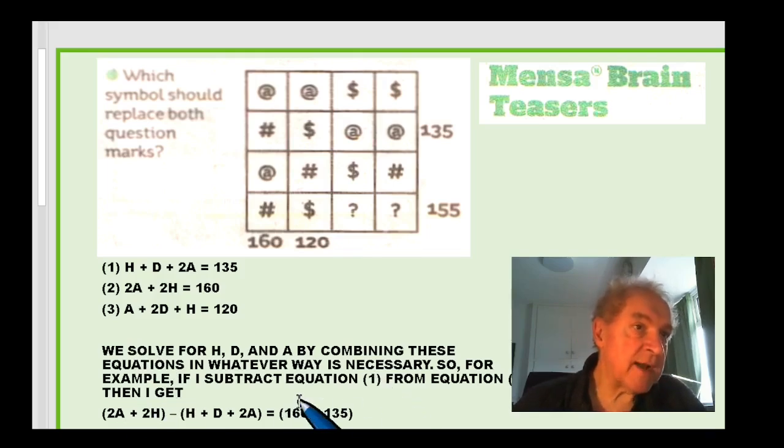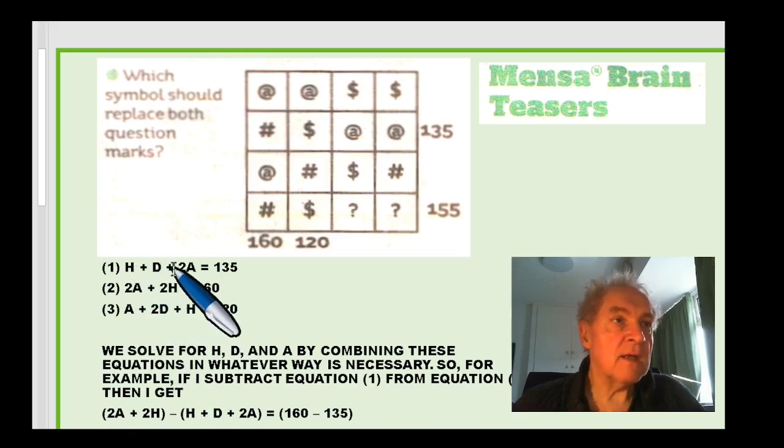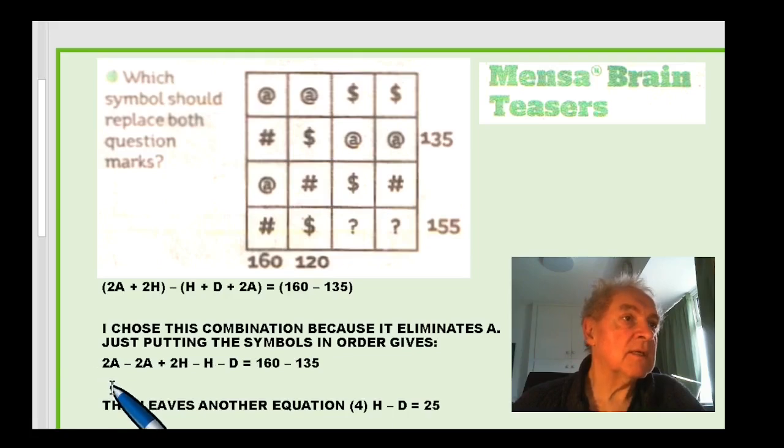So if I look at it, then if I subtract equation one from equation two, on the left-hand side we've got 2a plus 2h, and then on the left-hand side of equation one we've got minus h plus d plus 2a. On the right-hand side we've got for two it's 160, and then for one we've got 135. So you've got 2a minus 2a plus 2h minus h from this side, and then minus d from this side, and there's no d's here.